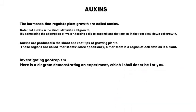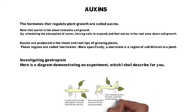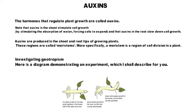Auxin slows growth in the root so that the root curves downwards. Auxin stimulates growth in the shoot so the stem curves upwards.